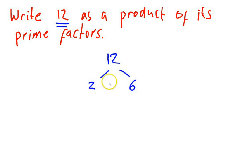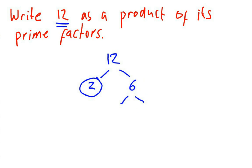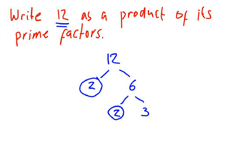It doesn't matter which pair you choose — I could have done 3 and 4 — you will still eventually get the same answer. Every time a prime number comes out as one of these factors, we circle it. So 2 is a prime number, so we circle that. 6 is not a prime number, so we carry on and think of two factors of 6: 2 and 3. Remember to circle any number that is a prime number and that branch comes to an end. So 2 times 2 times 3 gives me 12, and each of these are prime numbers.